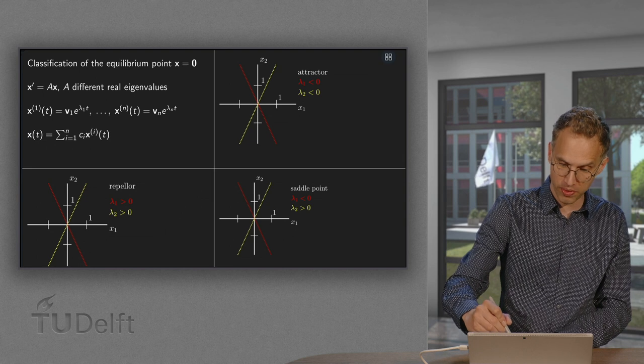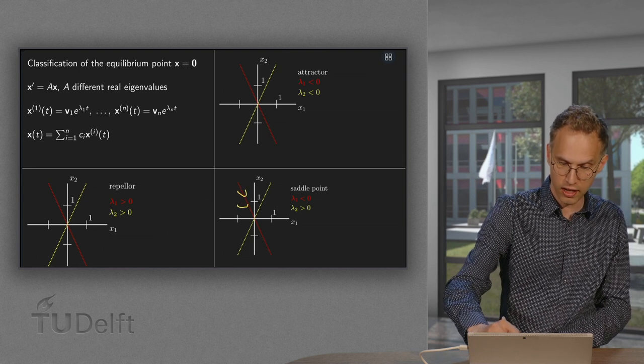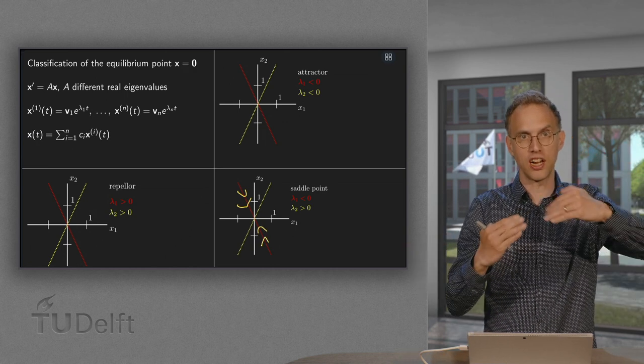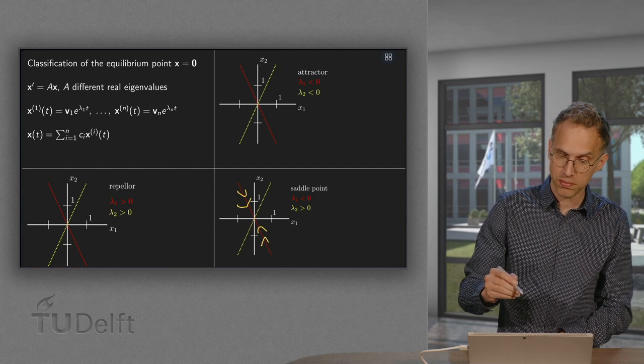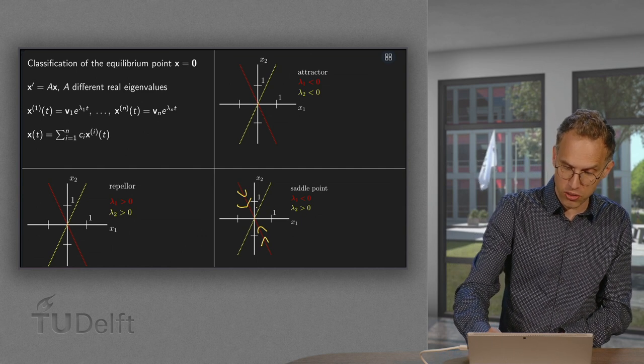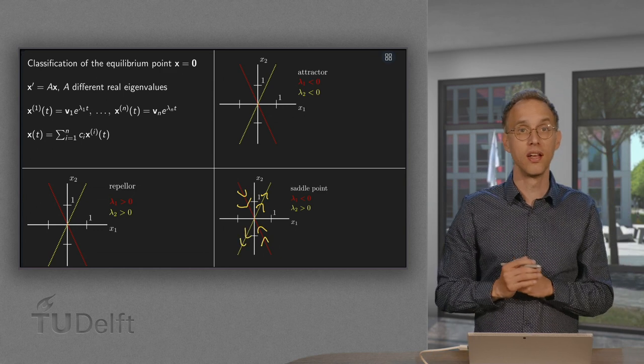Now, if you are starting at v1, your lambda 1 is negative. So your e^(lambda 1t) is going to pull you inside. You're going towards the origin. It looks sort of stable. However, your e^(lambda 2t) is going to pull you out because that one is positive.